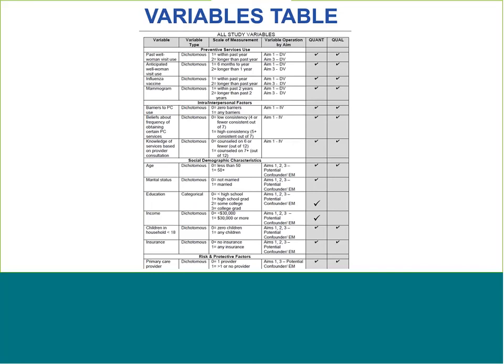It may also be helpful to develop a variable table. This is another visual display that enables you to clearly show which variables you are collecting data on, how they'll be measured if quantitative, which aim they pertain to if you have multiple research aims, and whether the data about the variable will be collected quantitatively or qualitatively.